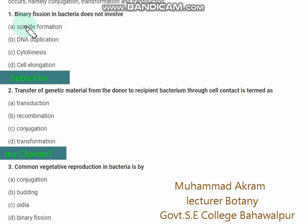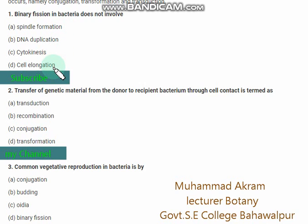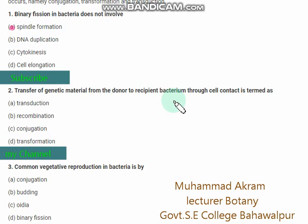Binary fission in bacteria does not involve spindle formation, DNA duplication, cytokinesis, or cell division. The right option is option A — spindle formation. The transfer of genetic material from the donor to recipient bacteria through cell contact is termed as conjugation.